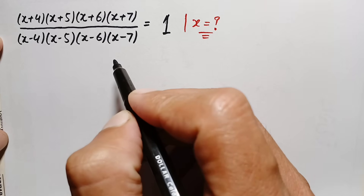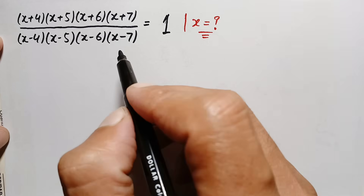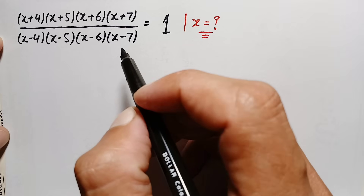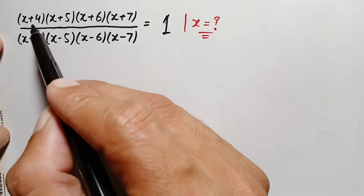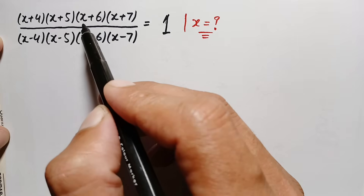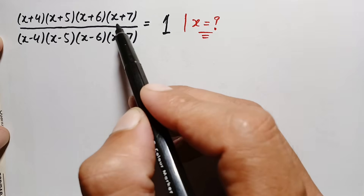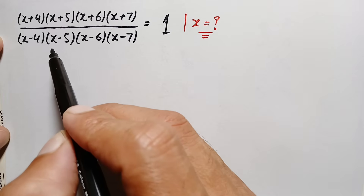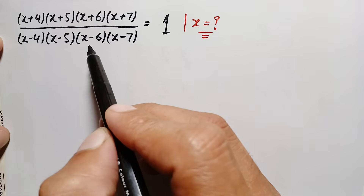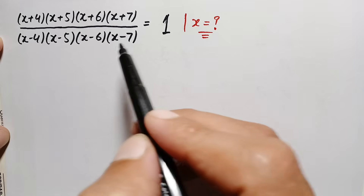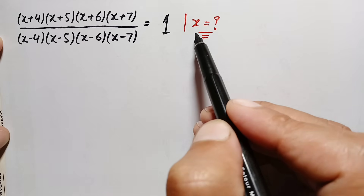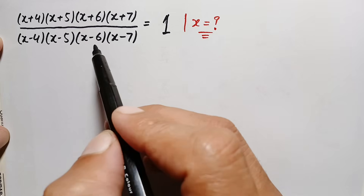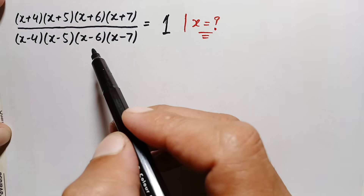Hello everyone, you are welcome. Today we have a new interesting algebra math problem: (x+4)(x+5)(x+6)(x+7) divided by (x-4)(x-5)(x-6)(x-7) is equal to 1. I will find the value of x and all the possible solutions of this algebra math problem.